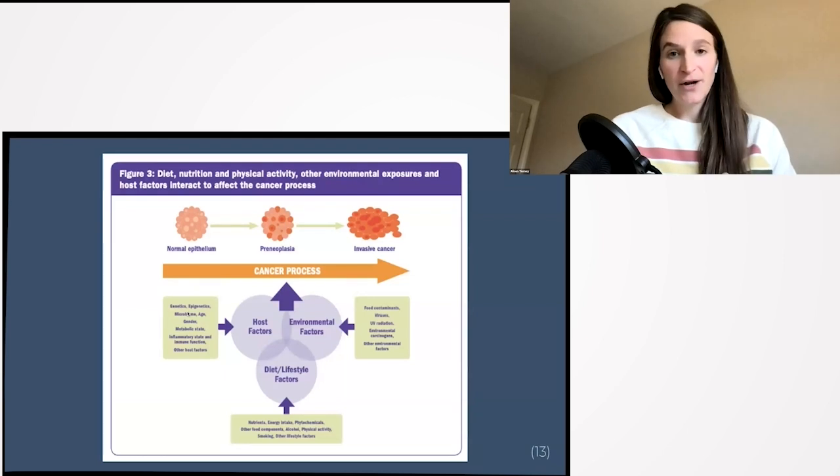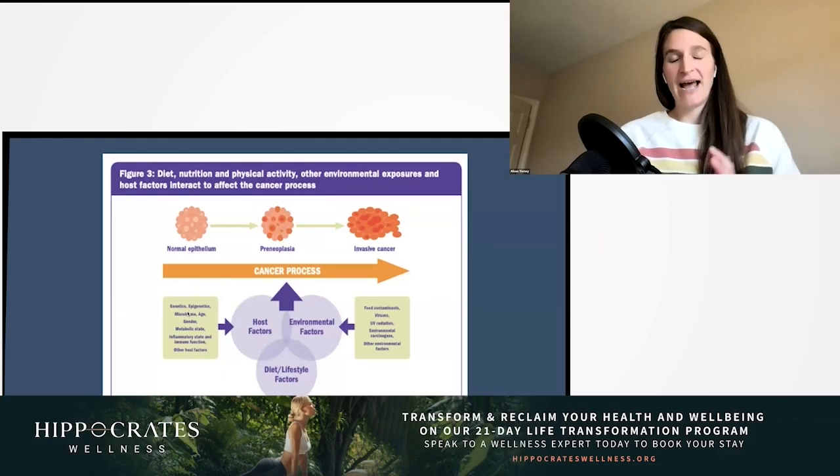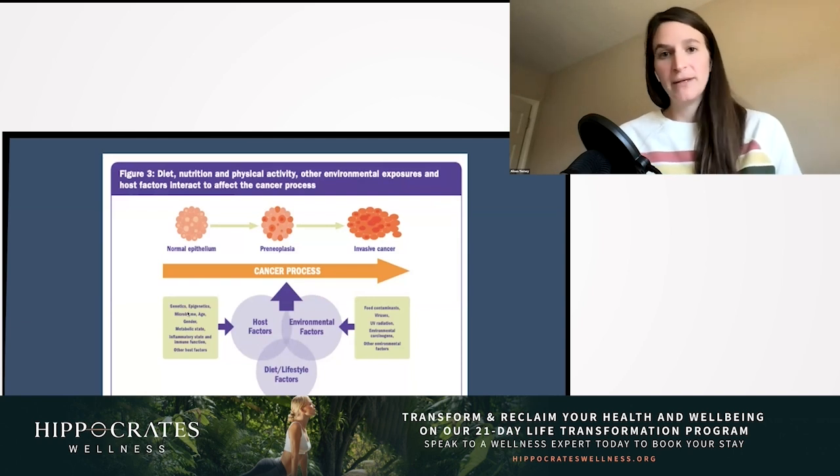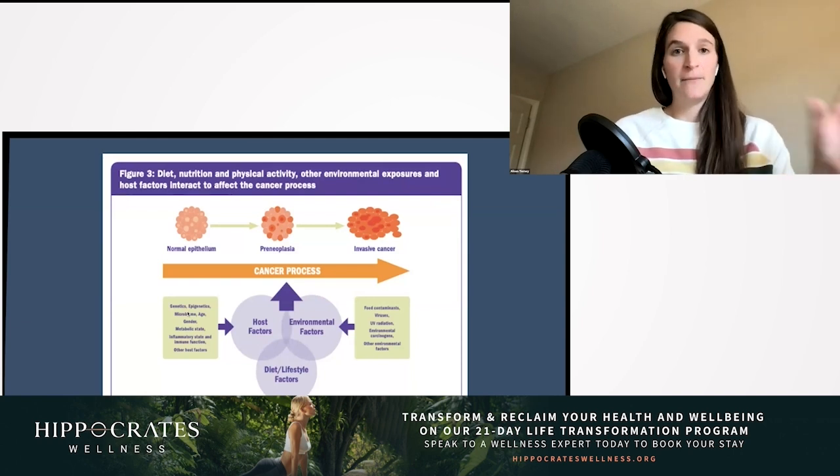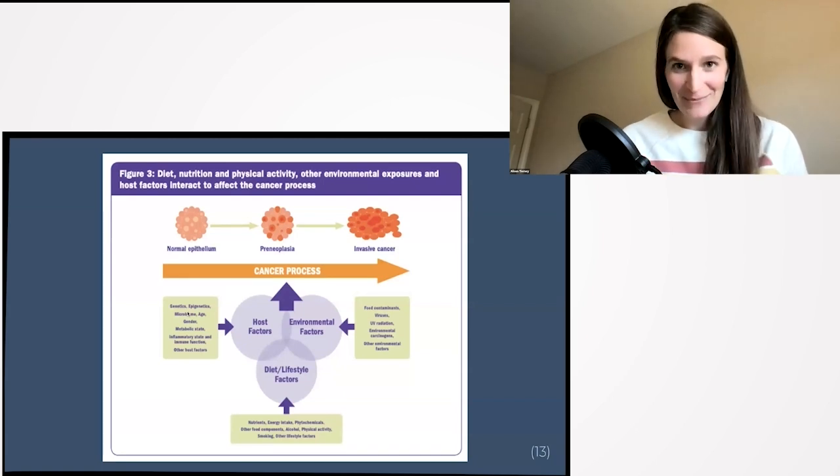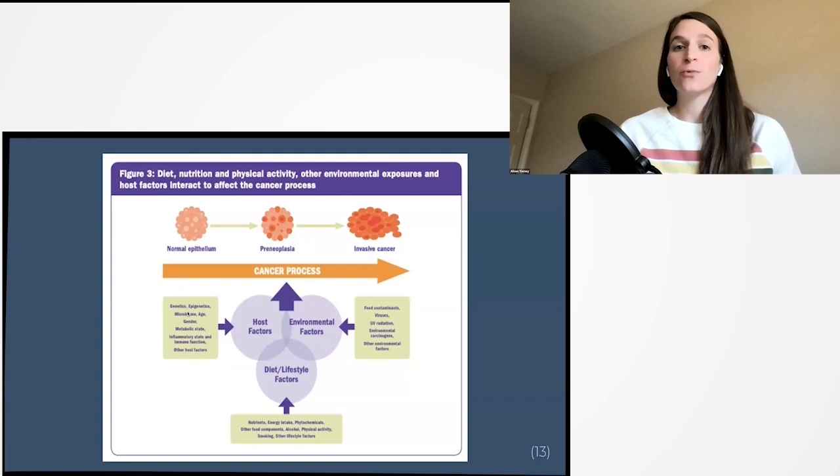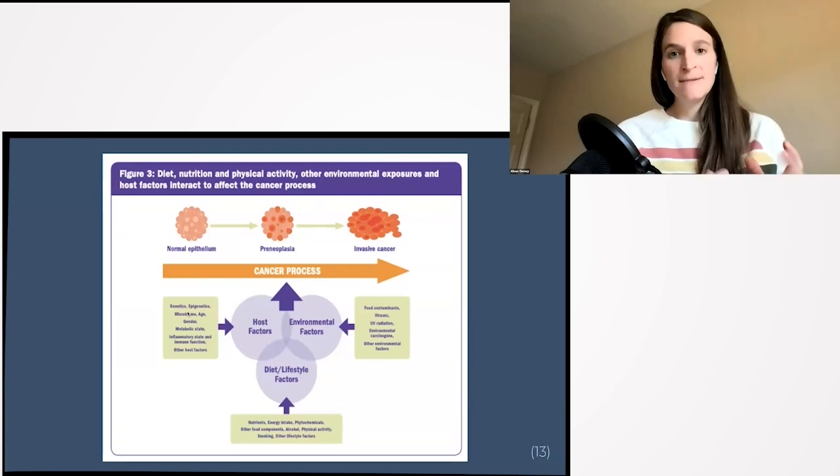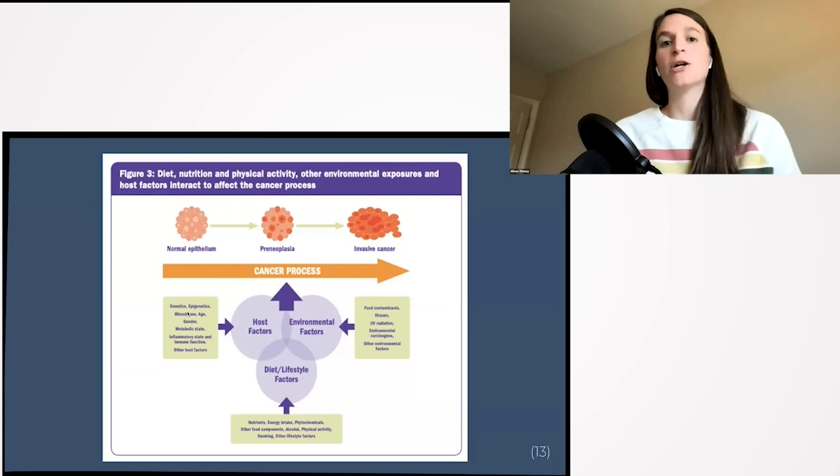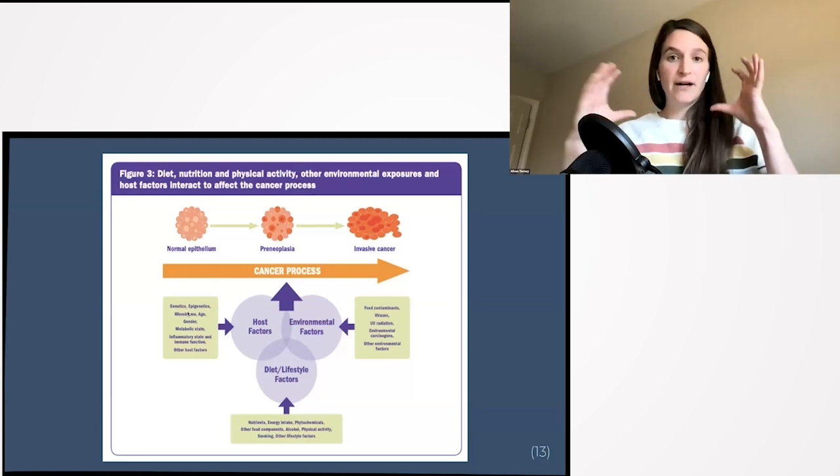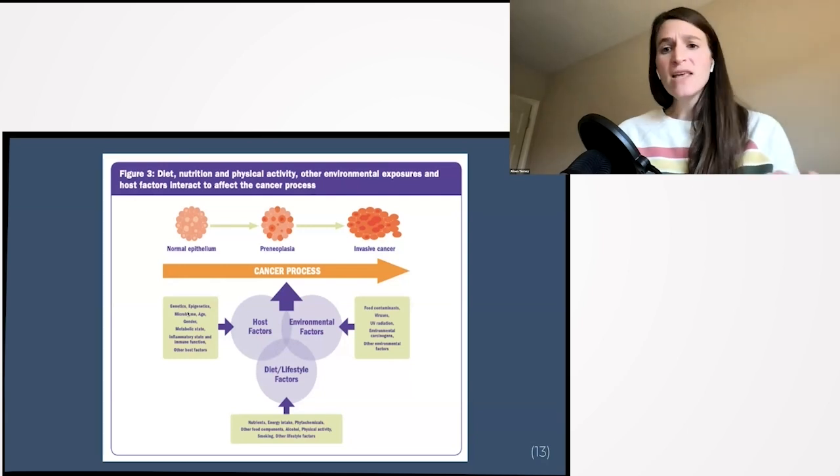This is an image from the Third Expert Report. I'm a visual learner, so I like to see these things. This is an example of what the cancer process looks like, obviously incredibly simplified, but all the factors that can play a role in cancer development. We start with a normal cell, then that cell starts to change and have a little bit of damage—that's considered pre-cancerous—and then becomes invasive cancer.